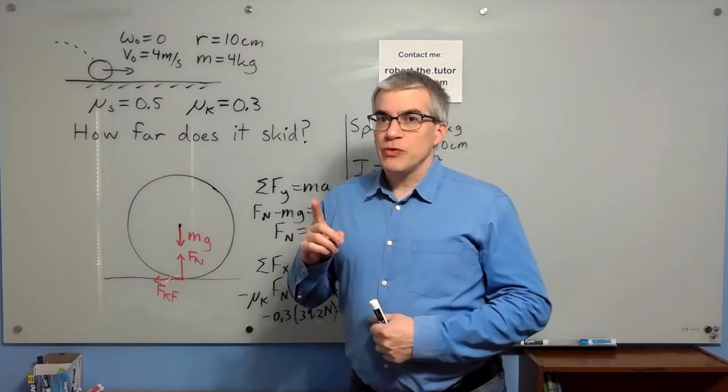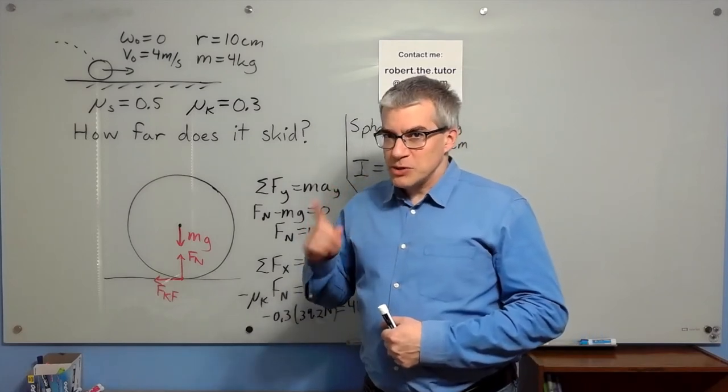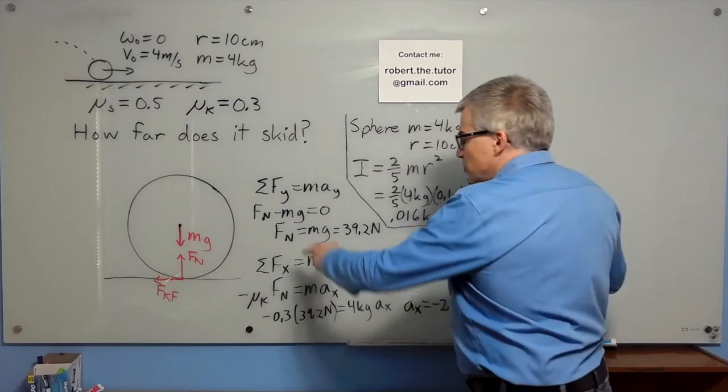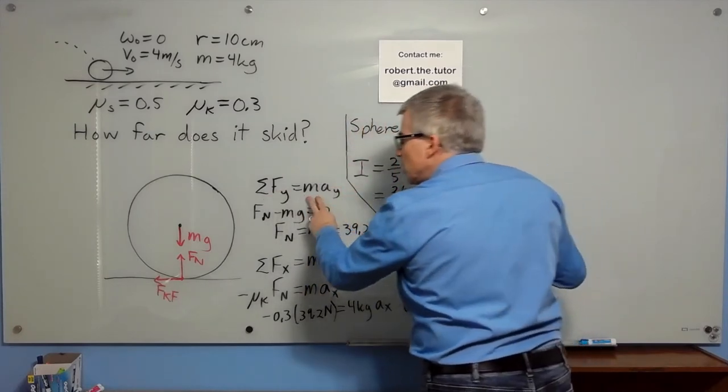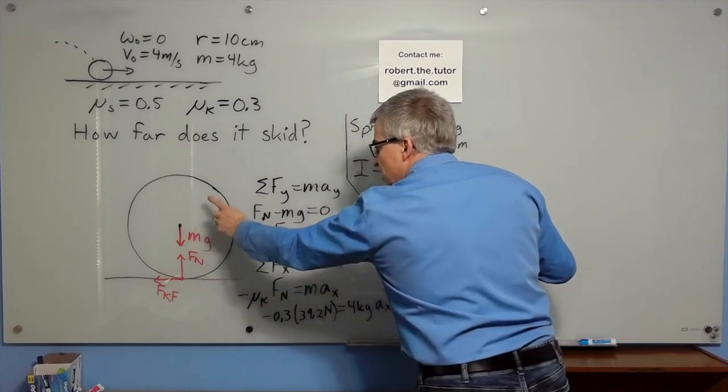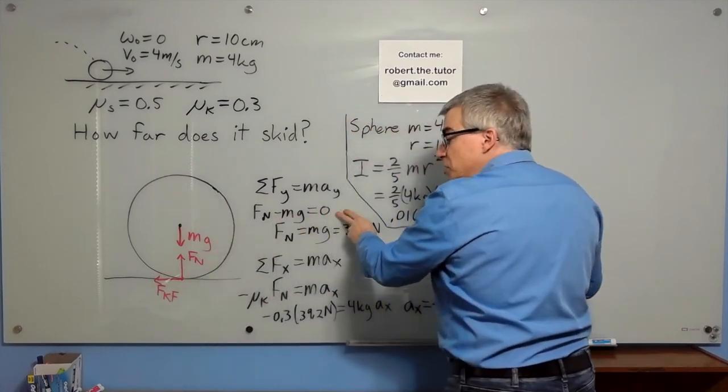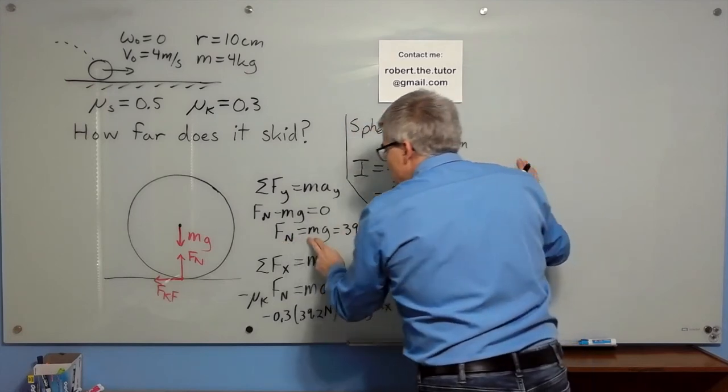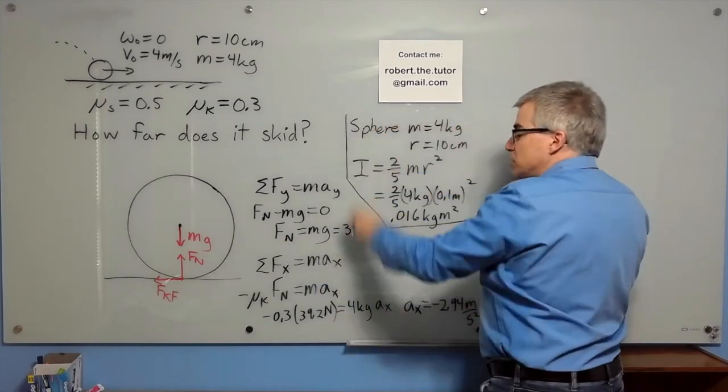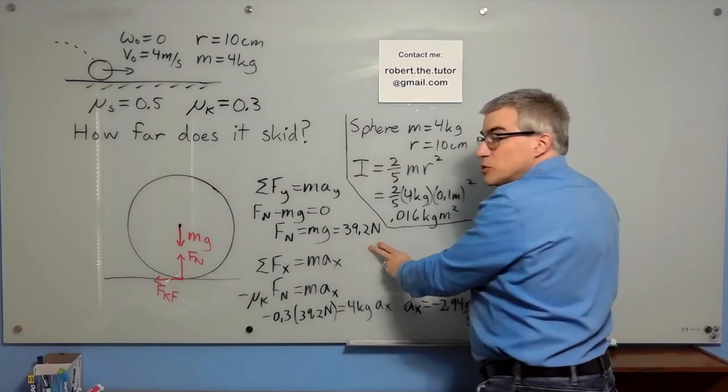What's the point of a force diagram? To write F equals MA. So sum of forces Y equals MAY, law of nature, always true. That means we have normal force up minus MG down equals zero because the ball is not going up and down. So the normal force equals MG, and since the mass is 4 kilograms, that's 39.2 newtons.